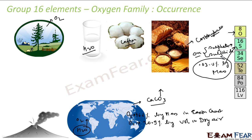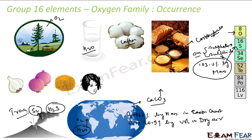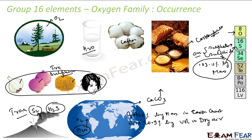Trace amounts of sulfur are also found in volcanoes — only small amounts — as hydrogen sulfide. It is also found in garlic, onion, mustard, and hair. Sulfur is in trace amounts only. Oxygen is very much abundant — about 21 percent in air and 46.6 percent in the earth's crust — while sulfur is not even 1 percent, only 0.03 to 0.1 percent.